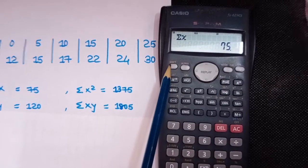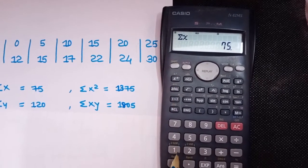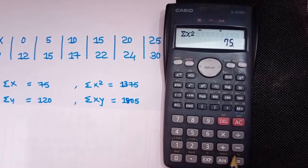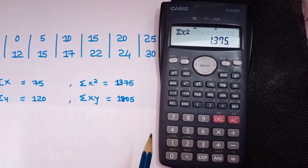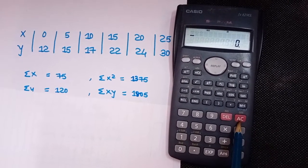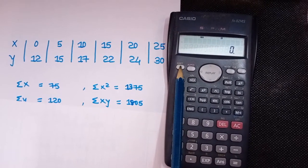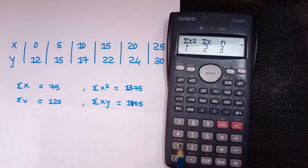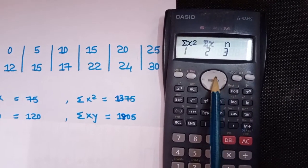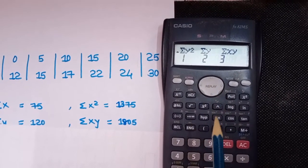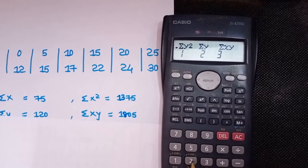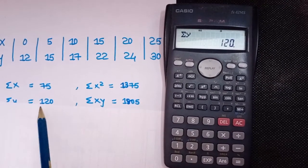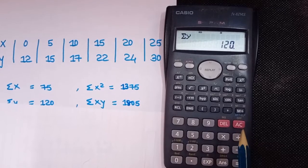Again press Shift then 1. Now I want to find out ΣX², so press 1 then equal — that gives 1375. Then press AC. Next I want to find ΣY, so press Shift S-SUM, then navigate to the next menu and select ΣY by pressing 2 and equal — I got the value 120.